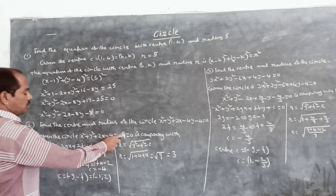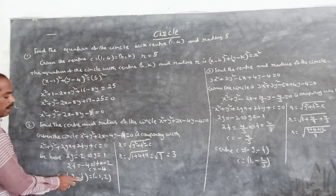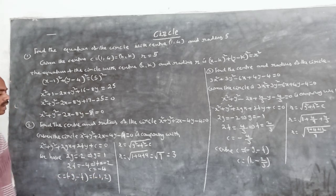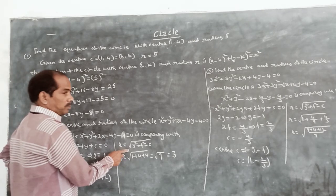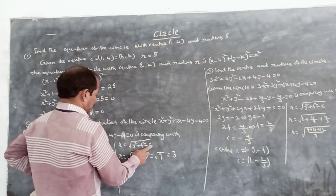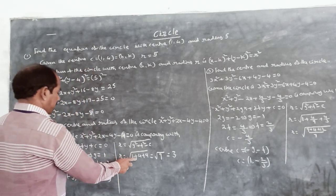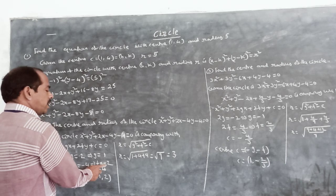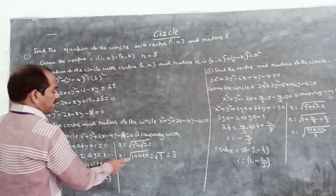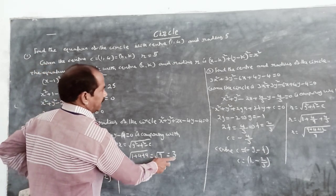Also, 2f is equal to minus 4, so f is equal to minus 2. The constant c is equal to minus 4. Center c is equal to (minus g, minus f), which gives minus 1 comma 2. For the radius: r is equal to square root of g square plus f square minus c, which equals square root of 1 plus 4 plus 4, equals square root of 9, equals 3.